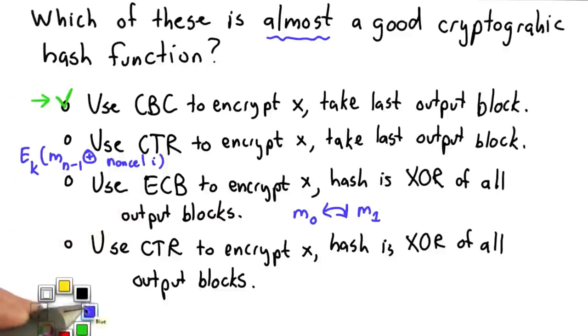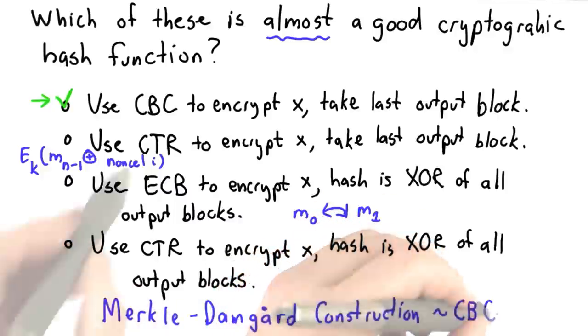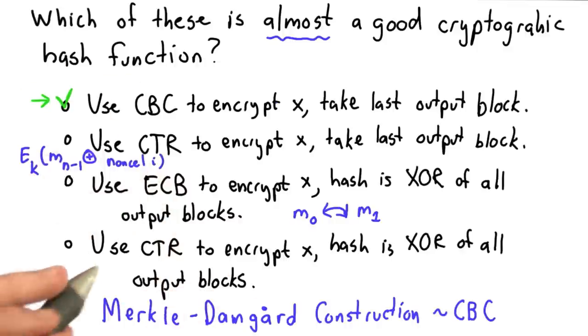The first one is actually pretty close to what traditional hash functions used, and it's a construction known as the Merkle-Damgård construction, which is quite similar to CBC mode encryption. Since it's a hash, we don't need a secret key. We can use the same key for each step, so we could select the key being zero.